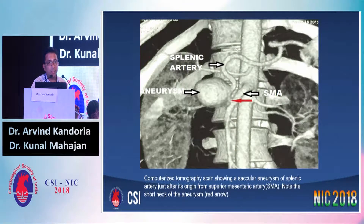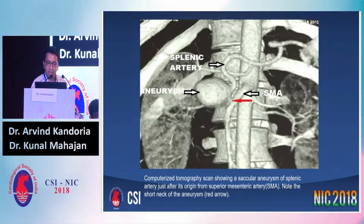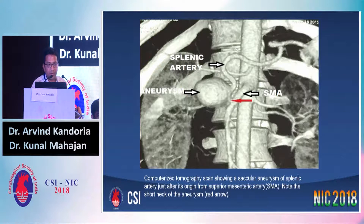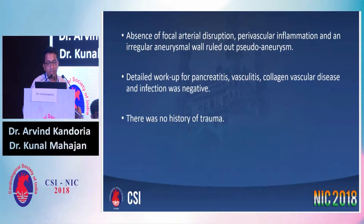It was a saccular aneurysm of around 32 x 26 mm. You can see from the SMA, from its short stalk, there is an origin of the splenic artery, and just at the origin of the splenic artery, there is a large massive aneurysm of around 32 x 26 mm, further continuing as the distal part of the splenic artery. This is a very rare situation — less than 30 cases have been reported worldwide of anomalous splenic artery originating from the SMA.